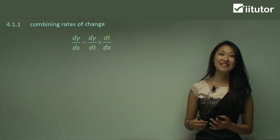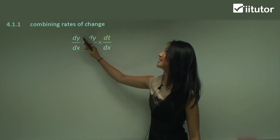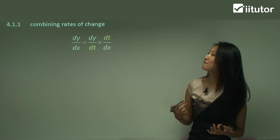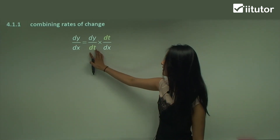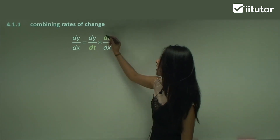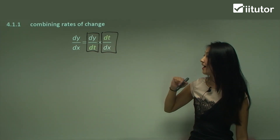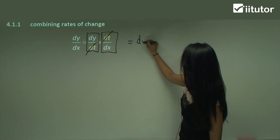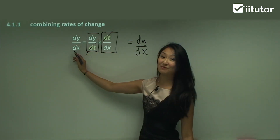All it really is, is we just need to combine rates of change. We're used to just having dy on dx. But what happens in these questions is that the question itself doesn't give you enough information to work out dy on dx directly. So what you need to do is separate it into two rates of change, and you have enough information to work out each of these individually. When you multiply them together, the dt and that dt will cancel to give you dy on dx, which is exactly the same as your original rate of change.